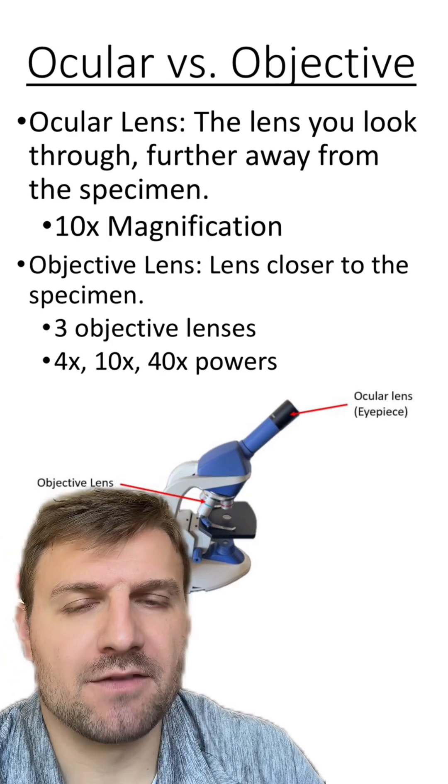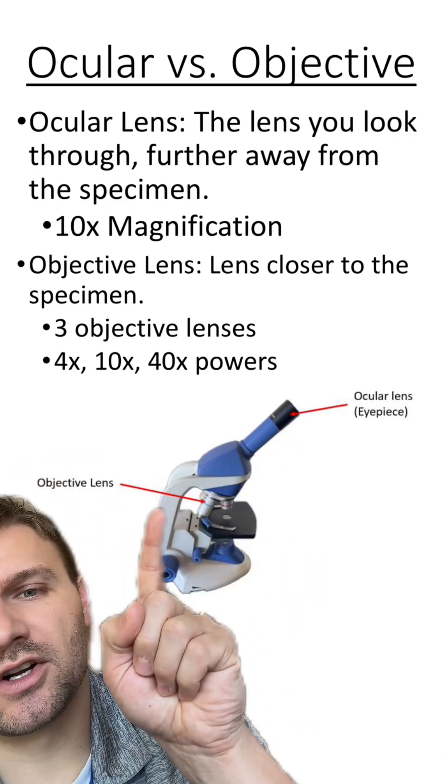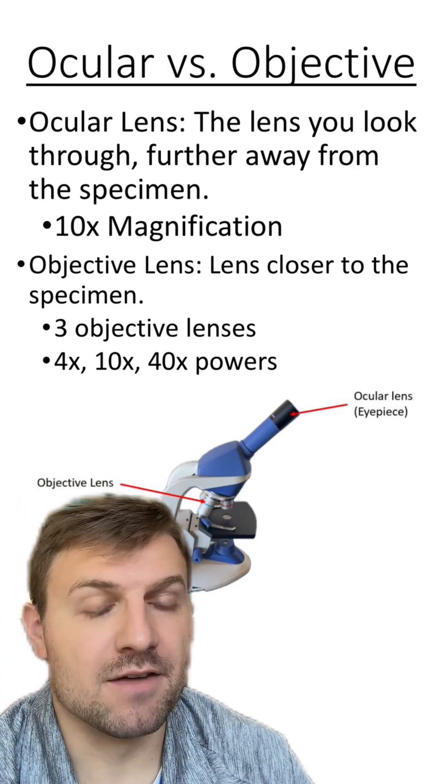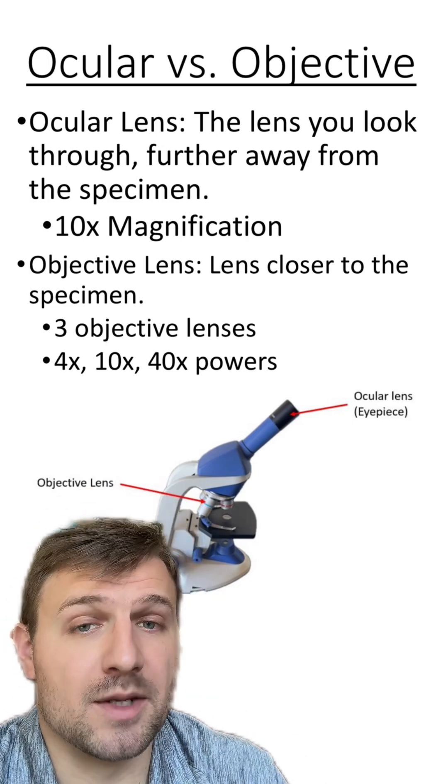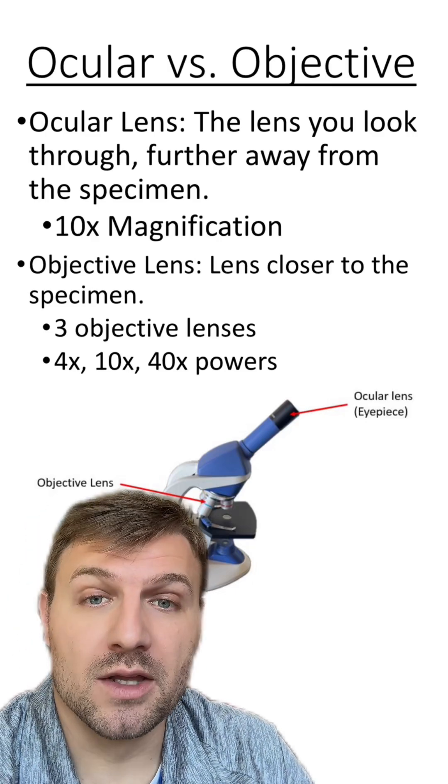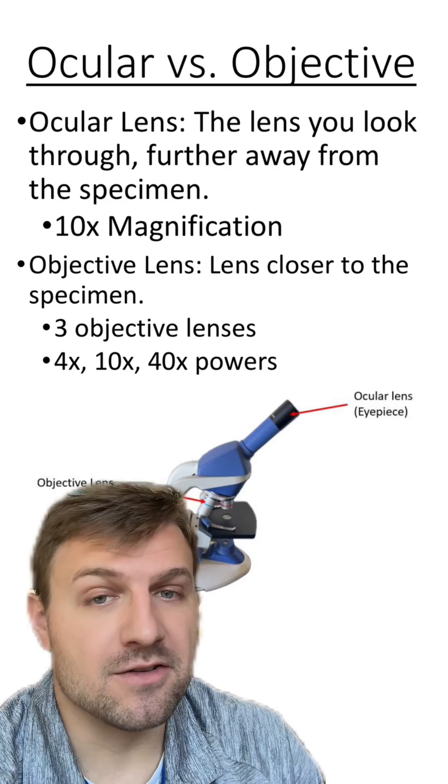Now, like I said before, you have two different types of lenses. You have your ocular lens and your objective lenses. Typically, the ocular lens will have a magnification of 10. And typically there will be three objective lenses, the 4, 10, and 40. Some microscopes will have a fourth lens, which is the oil immersion lens, and that's usually at 100 magnification.